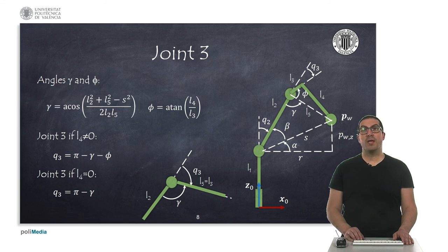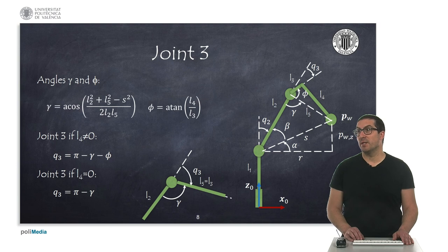A very common case is when the distance L4 is 0, which simplifies the formula as indicated below, and the distance L5 and L3 actually are the same distance.